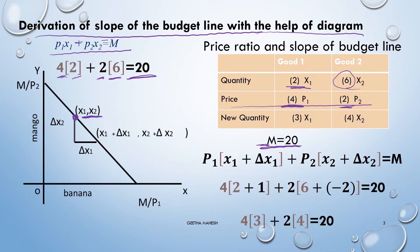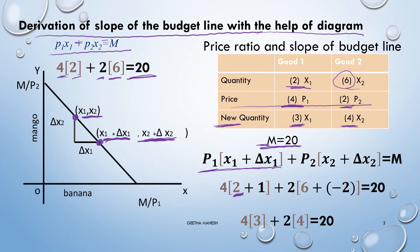Now the consumer is going to move from this combination to a new combination. In place of X1 we take X1 plus delta X1, and in place of X2 we take X2 plus delta X2. The new quantities he is going to buy are three units of good one and four units of good two. The price of good one is P1; previously he bought quantity two and now he is buying three units, so the change in good one is plus one. The price of good two is 2 rupees.